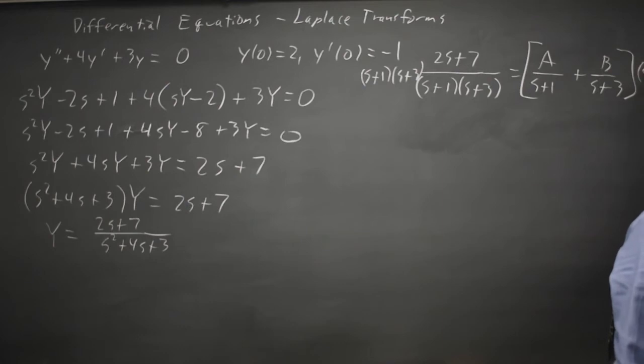Multiplying both sides by s plus 1 times s plus 3, these cancel leaving just 2s plus 7 on the left equals A times s plus 3 plus B times s plus 1.